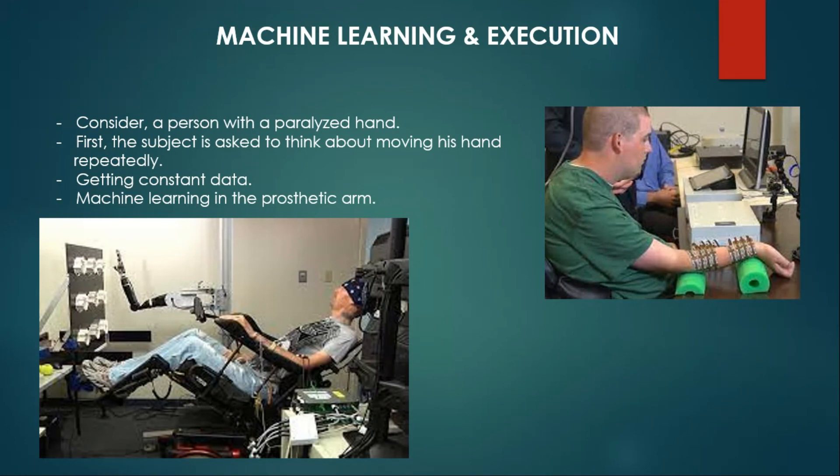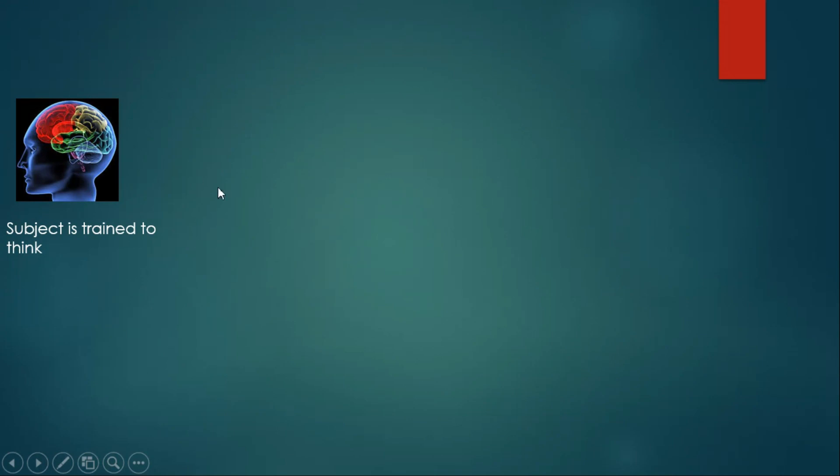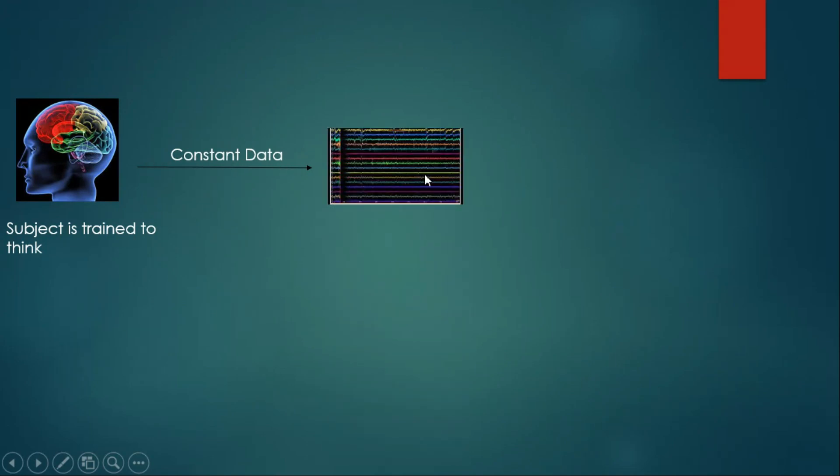Let me get to the next slide to make it more simple. First, the subject is trained to think. After receiving the constant data in the monitor, we know this constant data that we are getting is about moving arms.